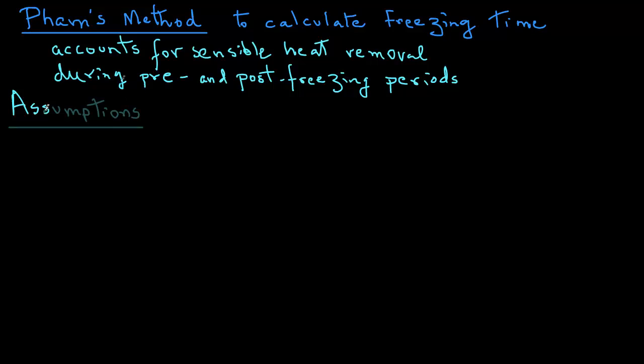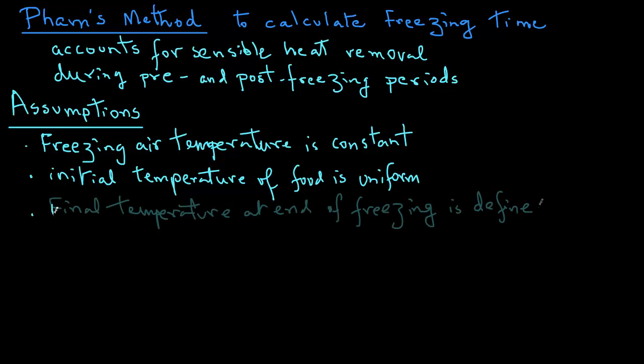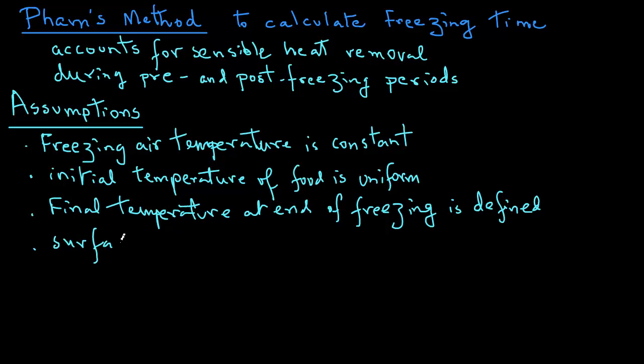First we will look at the assumptions that are made in this method. The freezing air temperature is uniform and constant. The initial temperature of the slab is uniform and constant. The final temperature required at the end of the freezing process is defined. And at the surface of the object, there is a convective mode of heat transfer.